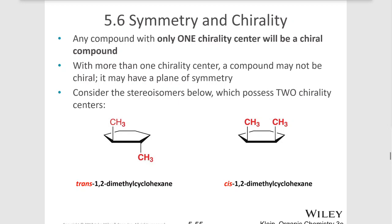Hello and welcome back. In this video we'll be discussing how symmetry relates to chirality. Any compound with only one chirality center is going to be a chiral compound. It's going to have a mirror image that will be its enantiomer. So when you have more than one chirality center, the compound may or may not be chiral because it may actually possess a plane of symmetry. Let's consider stereoisomers that possess two chirality centers.